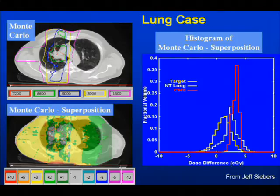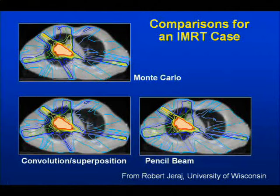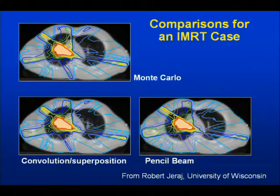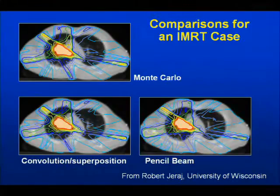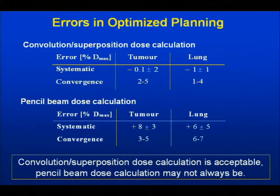One thing you have to worry about in intensity-modulated radiation therapy is convergence error. If you use a simple model like the pencil beam or convolutional superposition compared to Monte Carlo — which we think is the most accurate — these will actually be converging to the wrong fluence pattern because of the dose calculation error implicitly not getting the calculation right. The convolutional superposition will have some degree of error due to convergence error, which is actually quite a bit worse than the systematic error, and the pencil beam is even worse.